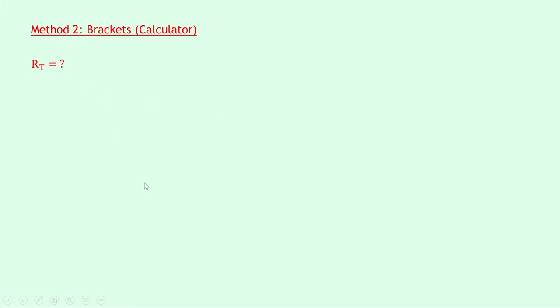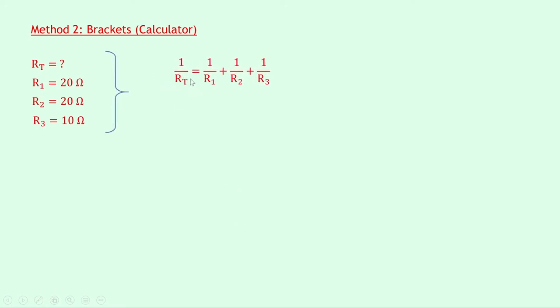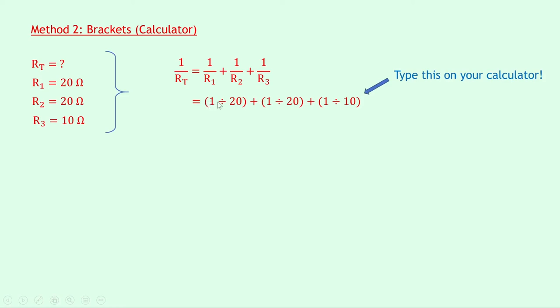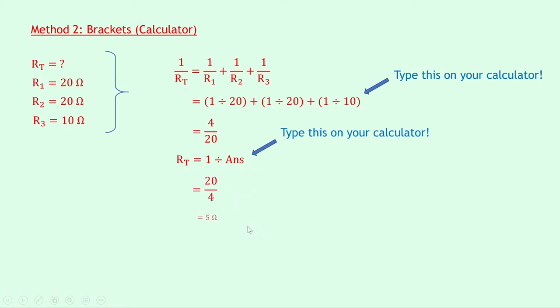Method 2 is what I call the brackets method, and this one mainly uses a calculator. Writing down what we know: RT is what we want, R1 is 20 ohms, R2 is 20 ohms and R3 is 10 ohms. Using the same equation 1/RT = 1/R1 + 1/R2 + 1/R3, substituting in the numbers gives 1/20 + 1/20 + 1/10. On your calculator you would type: bracket 1 divided by 20 bracket, plus bracket 1 divided by 20 bracket, plus bracket 1 divided by 10 bracket. This gives you 4/20, and then to flip both sides you do 1 divided by answer on your calculator to get RT = 20/4 = 5 ohms.